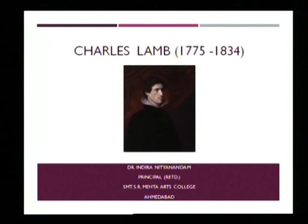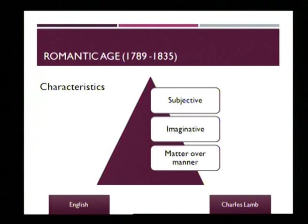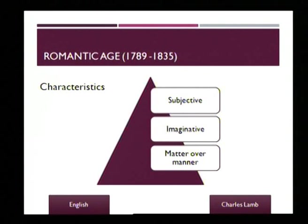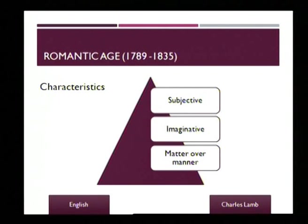1798 is the beginning of the Romantic Age; he lived and wrote during this period. As a quick revision: the writers of this period were very subjective in their writing, in total contrast to the neoclassical age where writers like Pope had objectivity. Words like 'me' and 'my' are often seen in the poetry of this period.